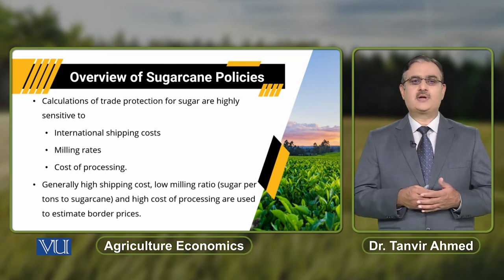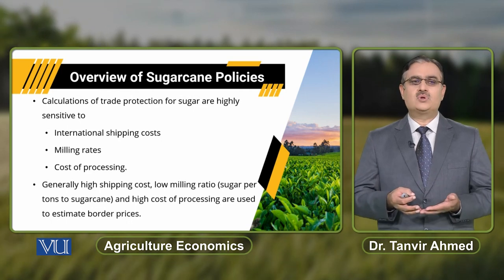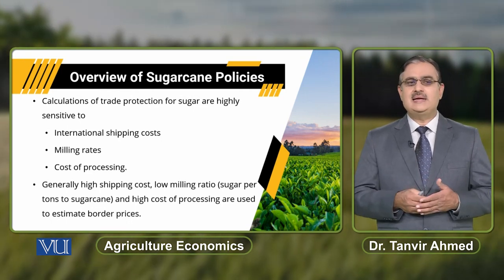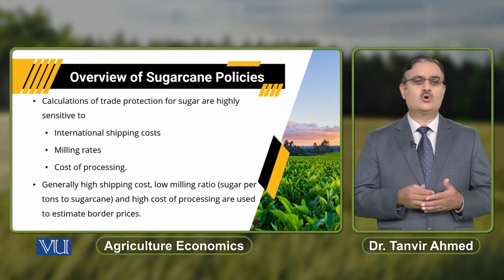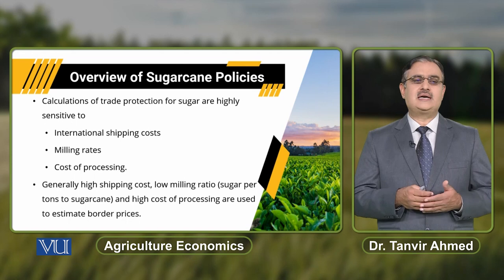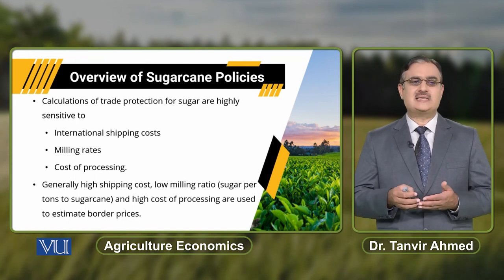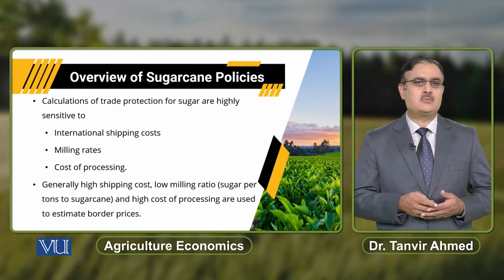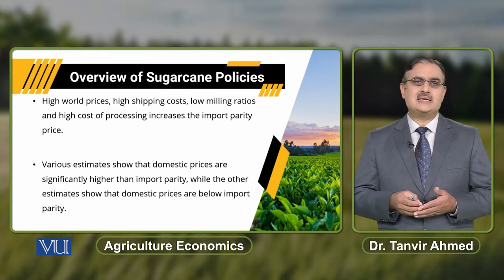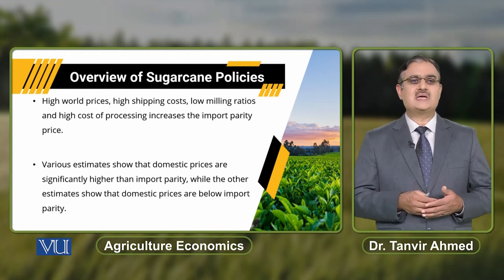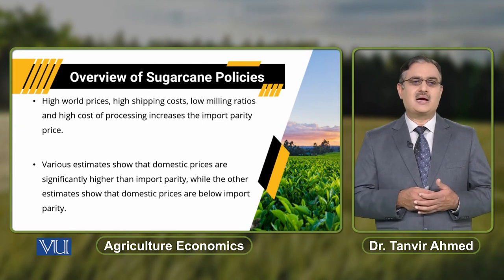Calculation of trade protection for sugarcane was highly sensitive to international shipping costs, milling rates, and cost of processing. Generally, high shipping costs, a low milling ratio — that is, sugar per tonne of sugarcane — and high cost of processing are used to estimate the border prices. High world prices, high shipping costs, low milling ratios, and high cost of processing increase the import parity price.